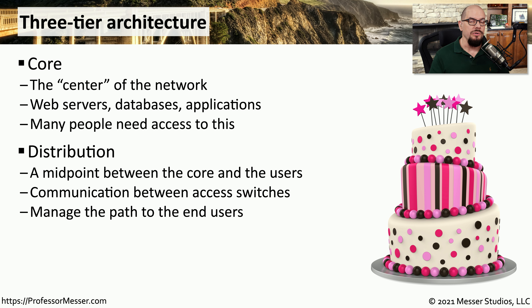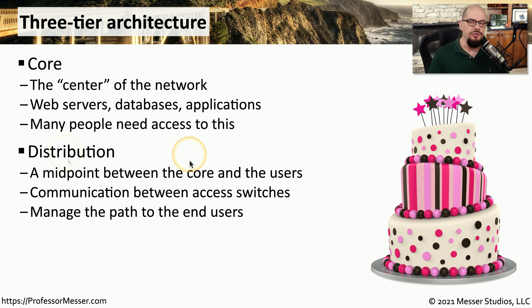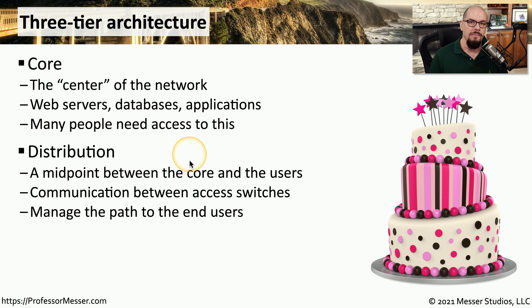The users, though, don't connect directly to the core. There's a midpoint called the distribution layer. This distribution tier manages the communication between all of the end users and the core of the network. This not only provides the users with a way to connect to the core, but it also provides redundancy and control of traffic into and out of the core.